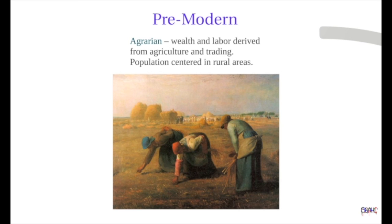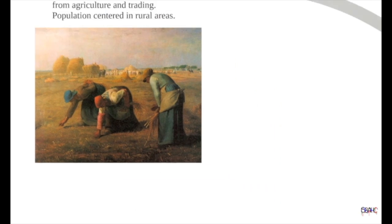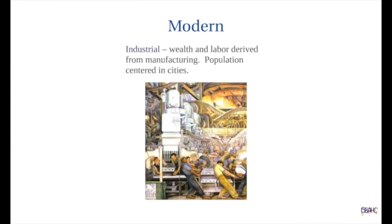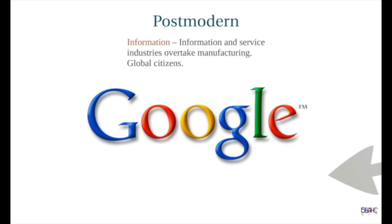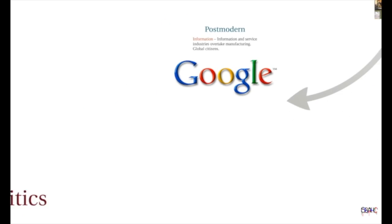During the transition to the modern era, in part driven by the Industrial Revolution's mass production of consumer goods, populations began shifting towards cities where factories were located. In the postmodern era, ready access to and control of information through the internet means that work can be done anywhere, and people and industries are seen more as global citizens.